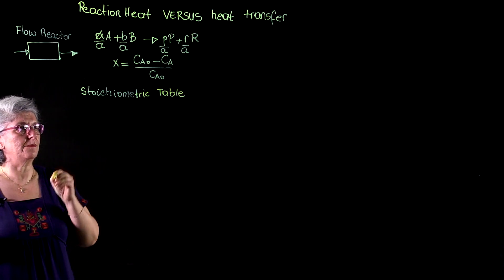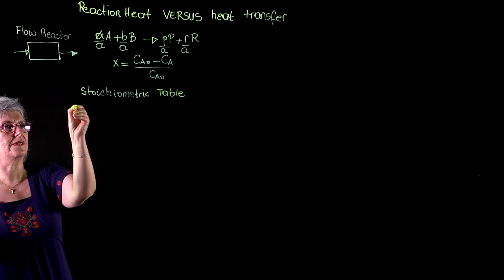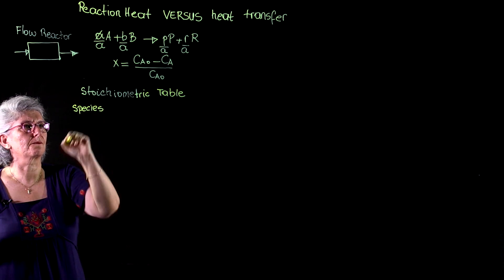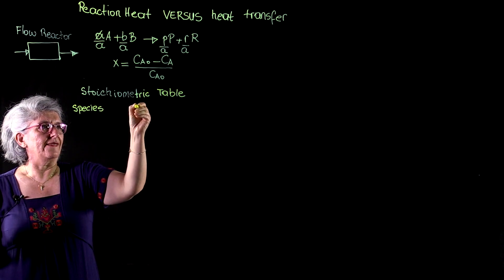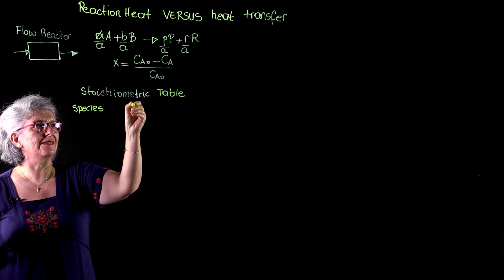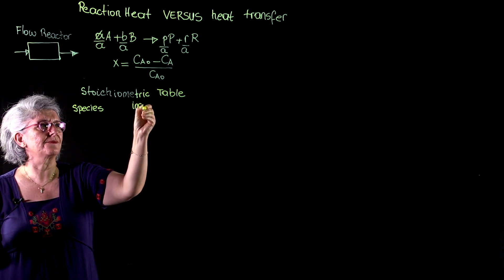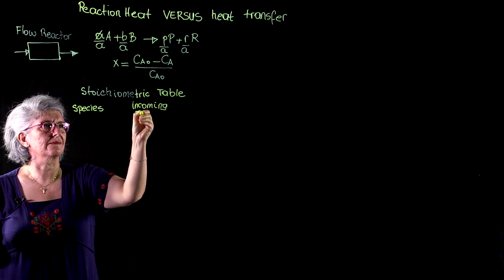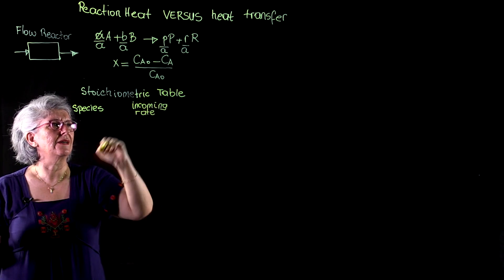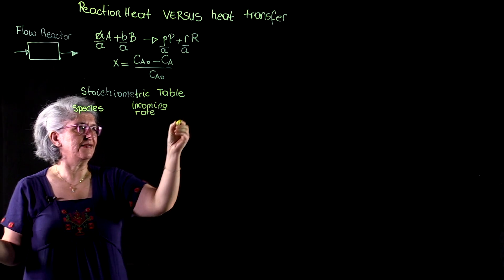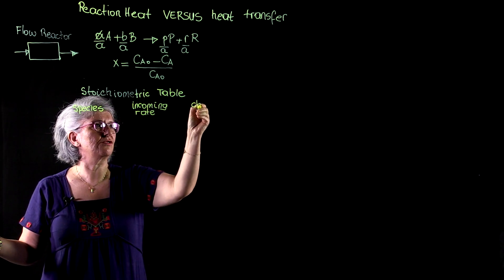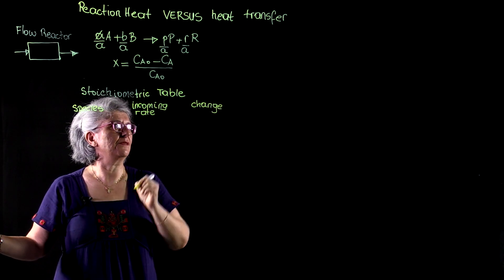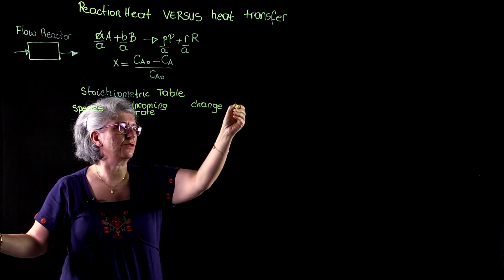In this stoichiometric table, we will have species that we will have their incoming rates. We will have the change that has occurred within the reactor. And we will have the outgoing rates.